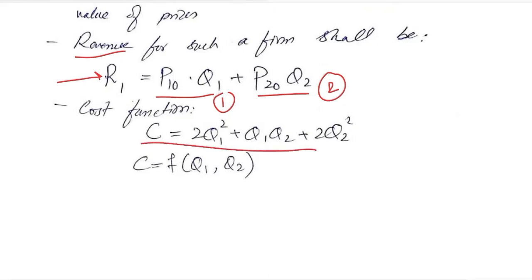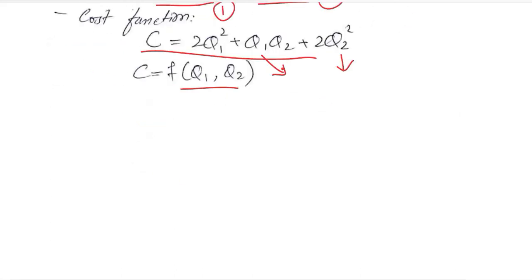The cost function is given in which Q₁ and Q₂ both are involved, and that is natural because we are producing two goods and their outputs, their quantities, will determine the cost. So both of the variables are included in this function.